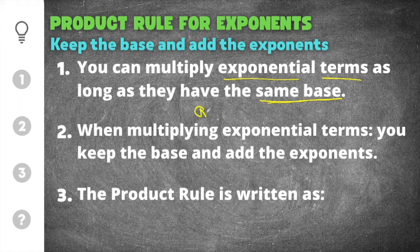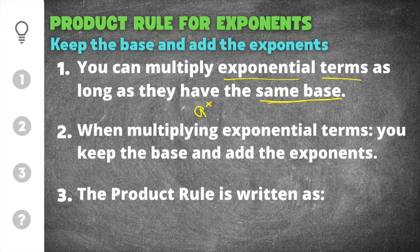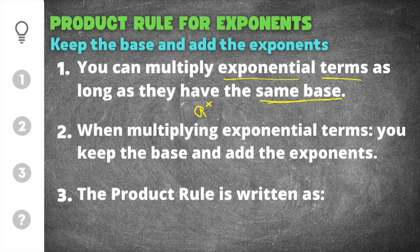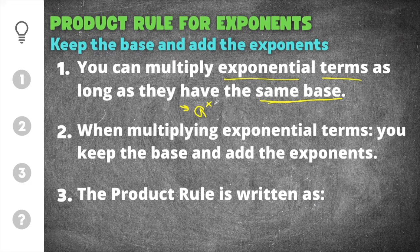Now the base in an exponential term is the number or letter that is attached to the exponent. So in the case of a to the x, the base is going to be the letter a and then the exponent will be the x.